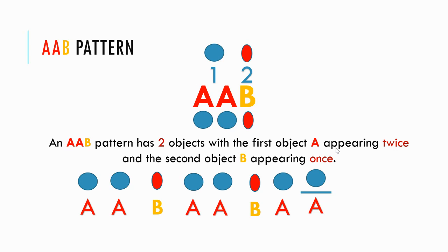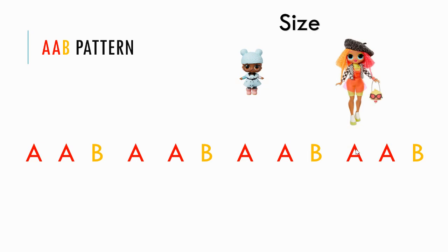The pattern repeats itself. Now let's look at another AAB pattern — this time with size. Here we have something small and something big: these are LOL and OMG dolls. The LOL dolls are smaller and the OMG dolls are bigger. So for our AAB pattern, A is for the little LOL and B is for the big one.